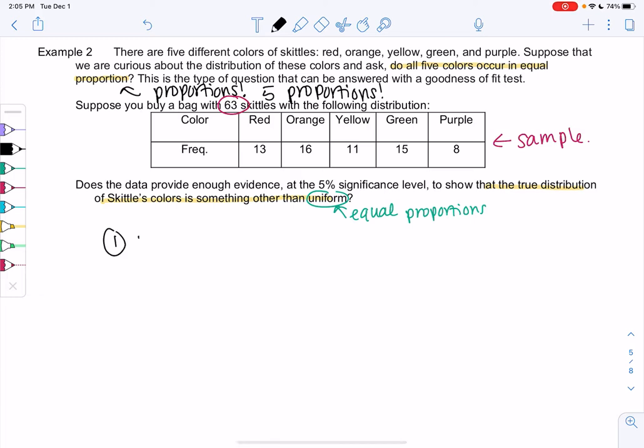Let's go ahead and set up our hypothesis and our alpha. So H0 is our equal case. All the proportions are the same. In math world, it's P1 equals P2 equals P3, P4 up to P5. In everyday language, it just means that the distribution of Skittles is uniform.